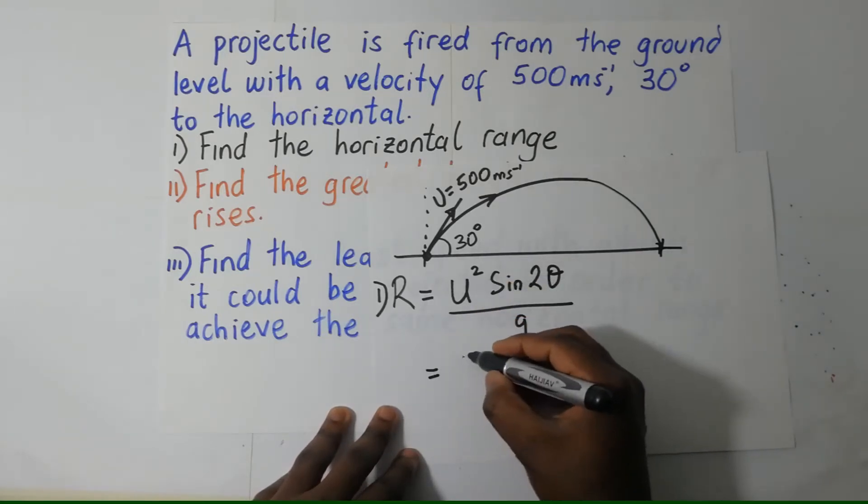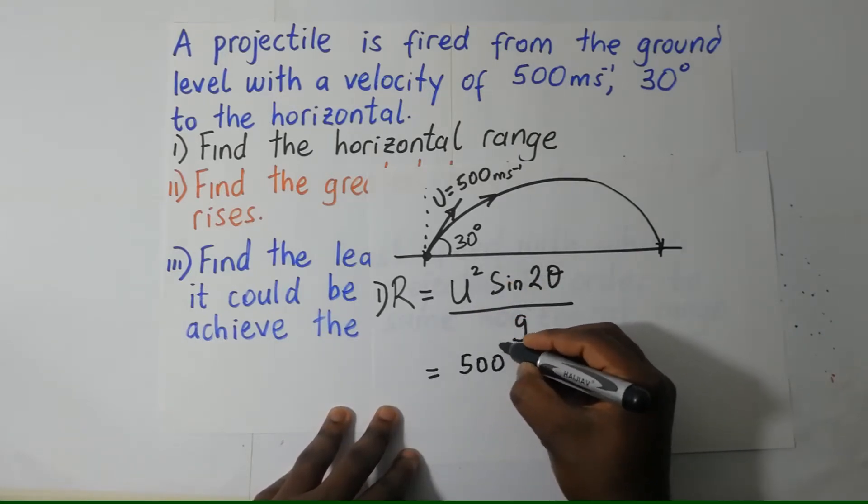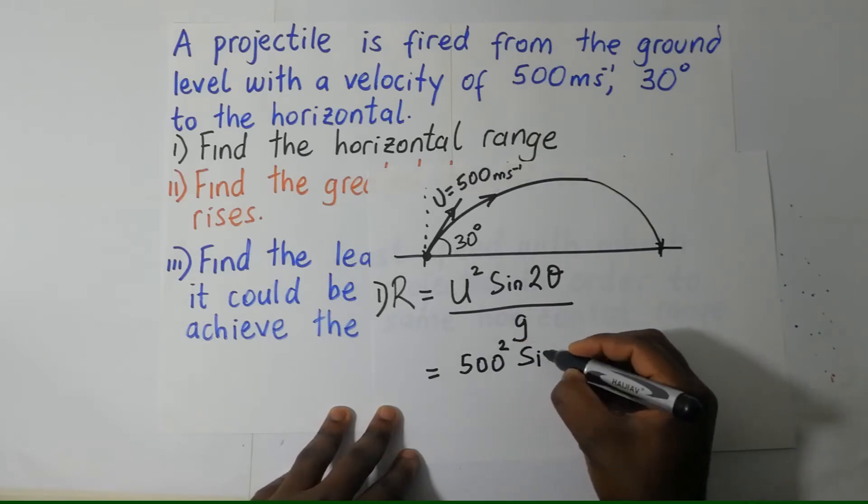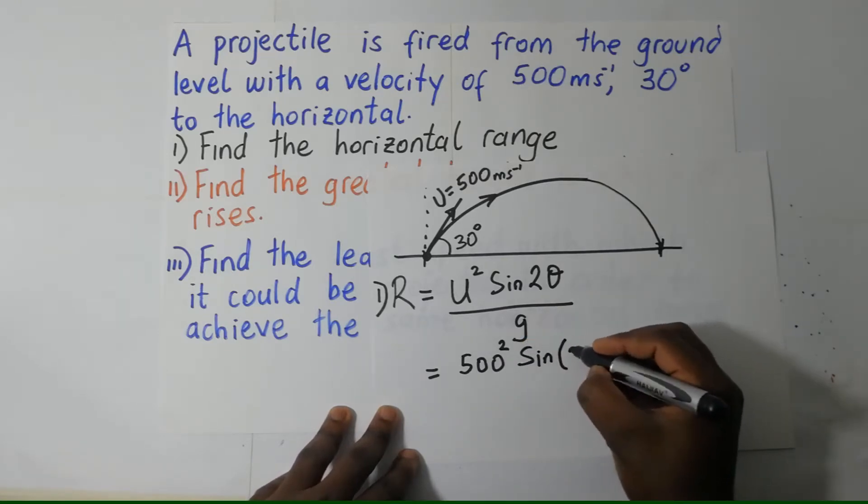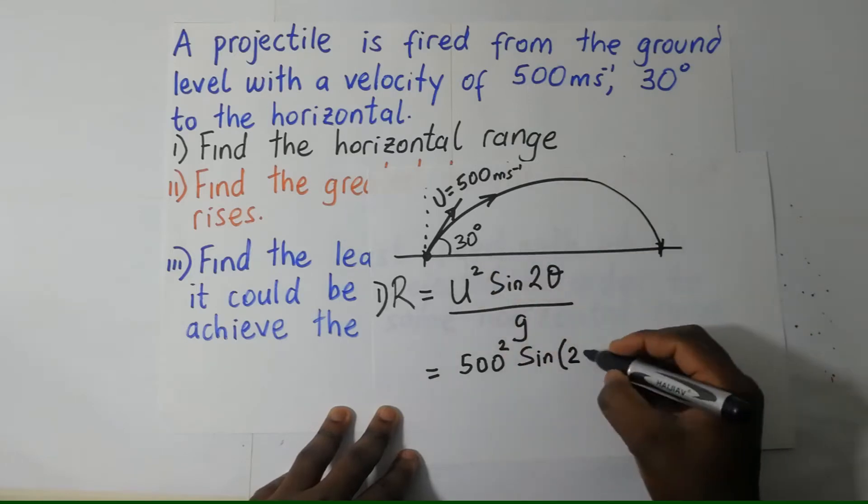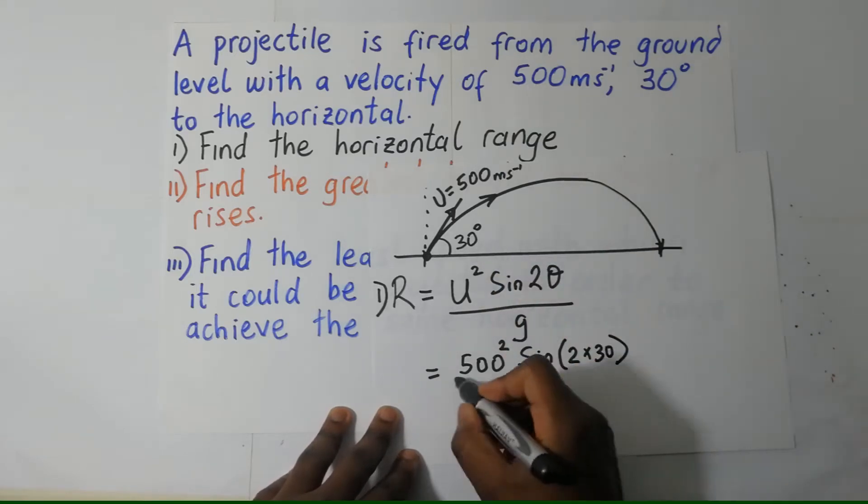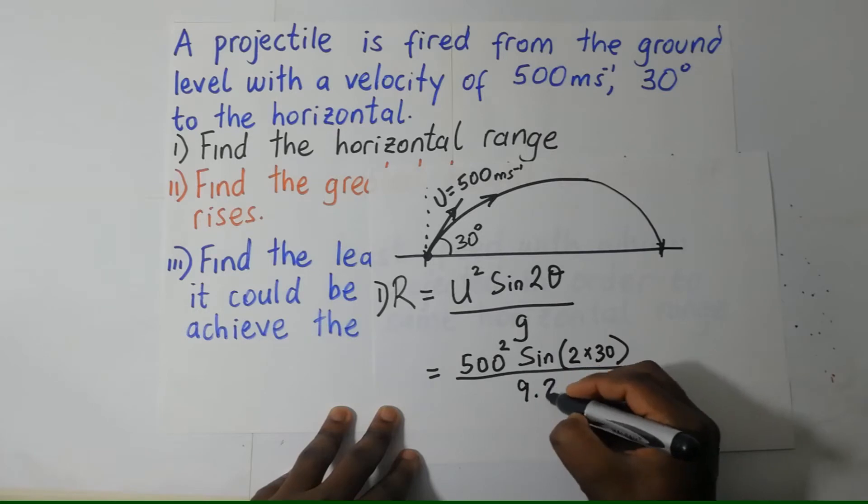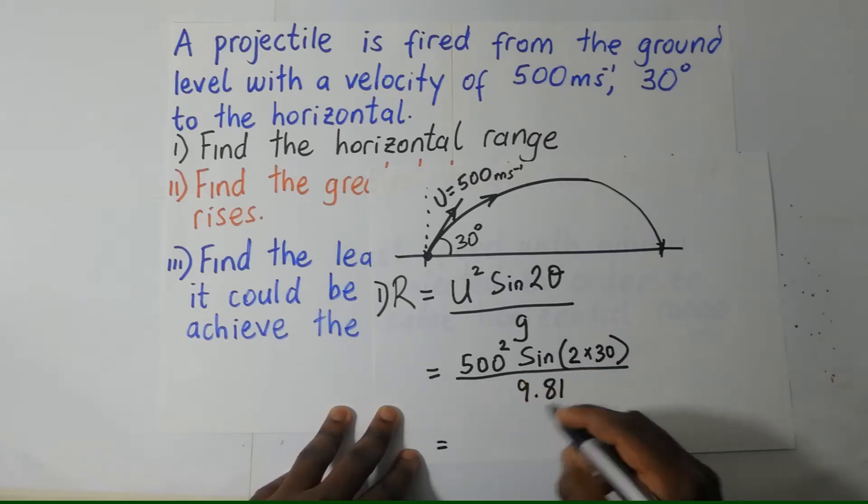R equals U squared is 500 squared, multiply that by the sine of 2 times the angle, which is 30, divide that by 9.81. It is that simple.